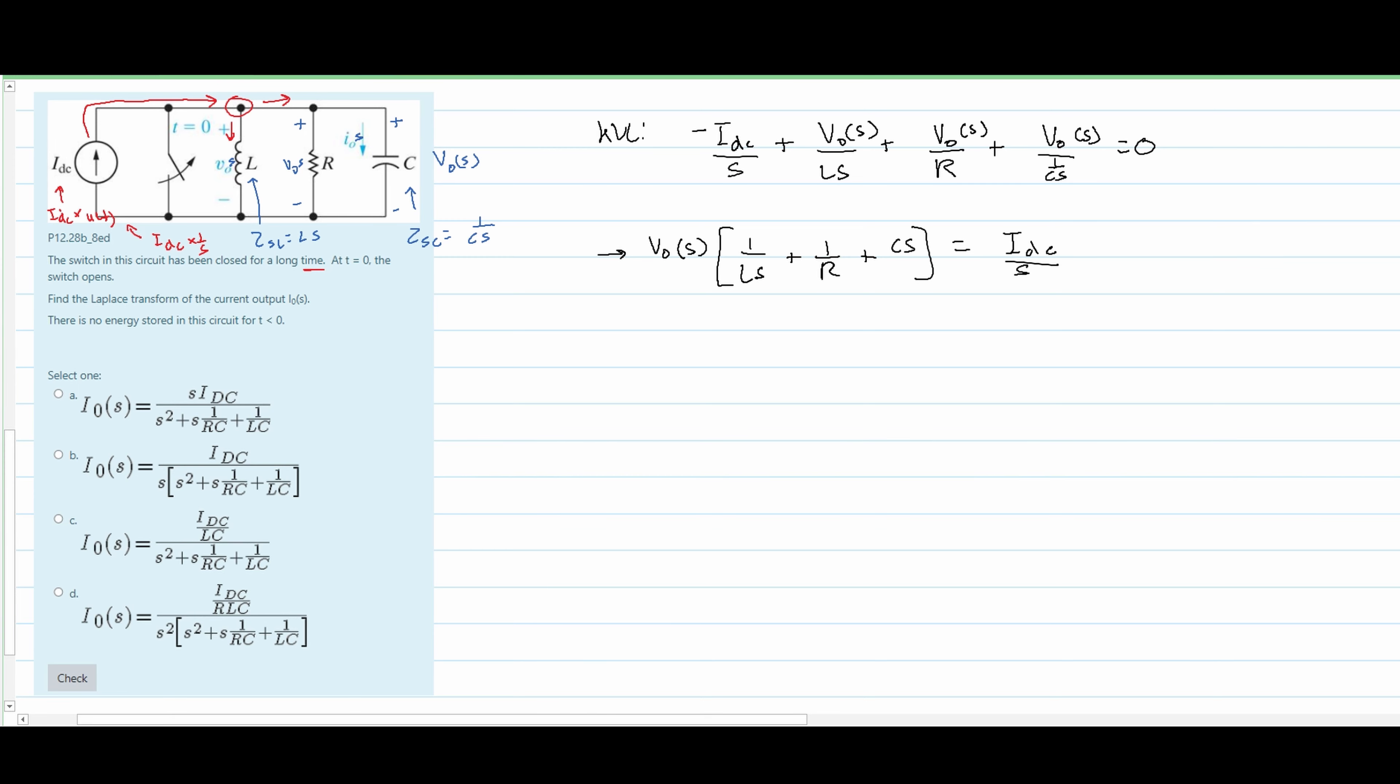And this is equal to IDC divided by s. So that is going to be our current equation now. We want to get rid of the fraction, so what I'm going to do is multiply both sides by s. So the s's will cancel out here, and we can factor this in on the left side.